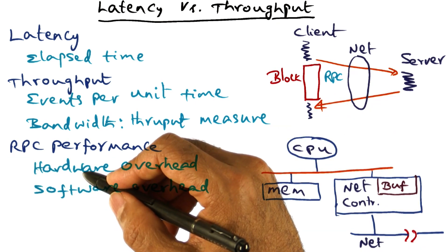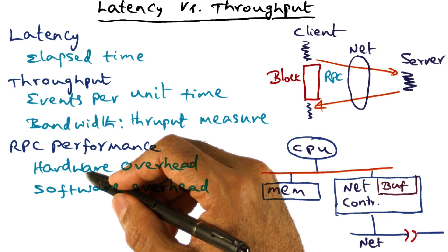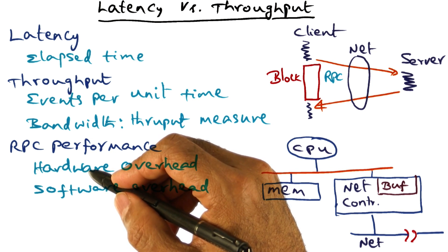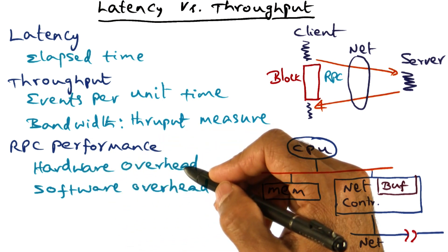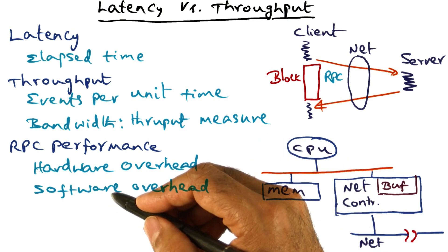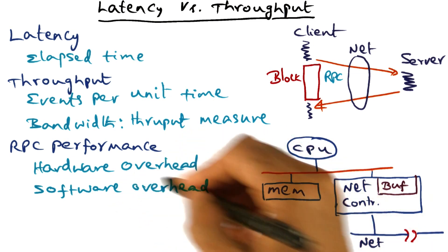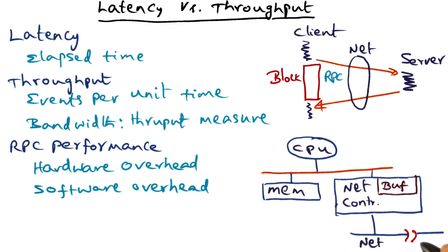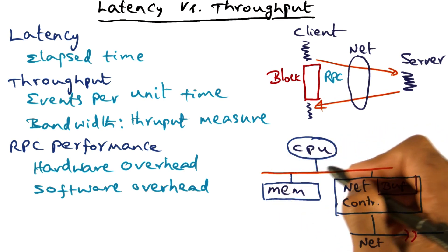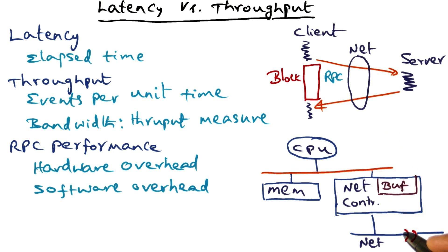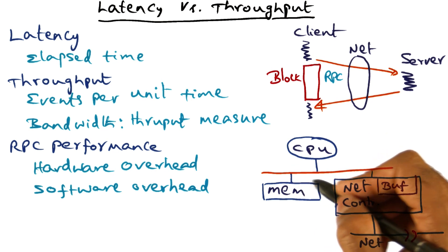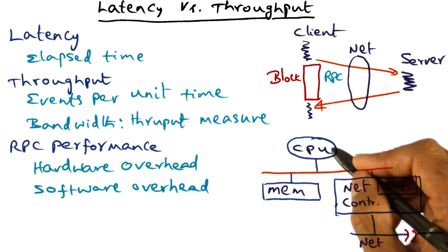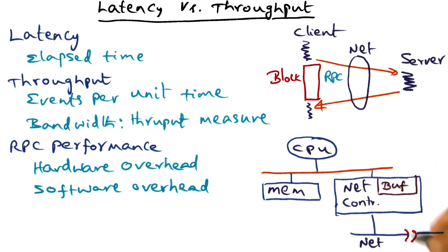There are two components to the latency that is observed for message communication in a distributed system. The first component is the hardware overhead, and the second component is the software overhead. The hardware overhead is really dependent on how the network is interfaced to the computer. Typically, in any computer, what you have is a network controller that interfaces the network to the CPU.